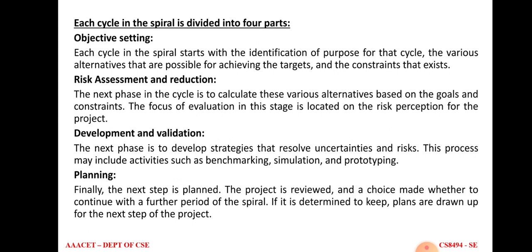Each cycle in the spiral is divided into four parts: objective setting, risk assessment and reduction, development and validation, and planning. Objective setting means identifying the purpose of each cycle and what type of product has to be developed. After that, they identify the risk encountered in each phase to gain knowledge to reduce it. After identifying and resolving risk, they develop the product and perform validation — that is testing — and finally planning. The project is then reviewed by the software team to deliver the product.